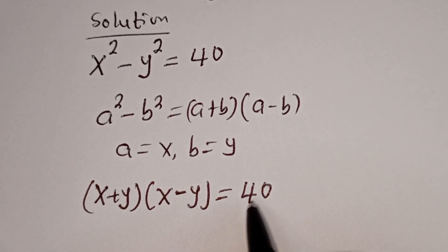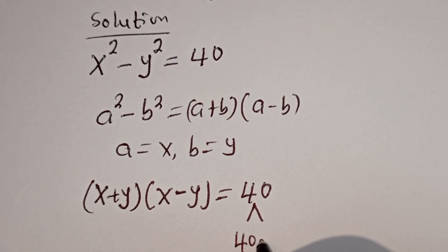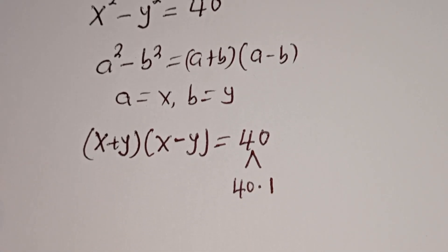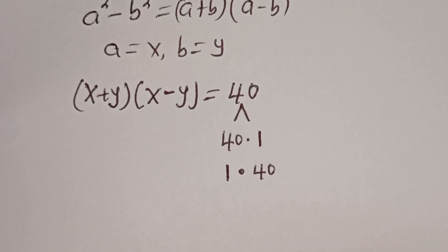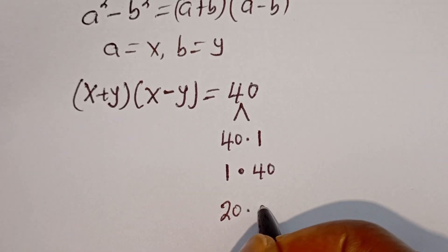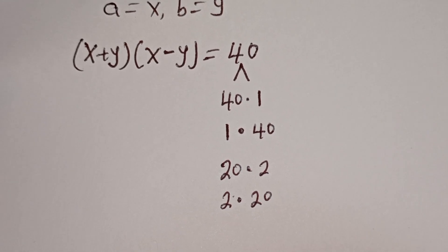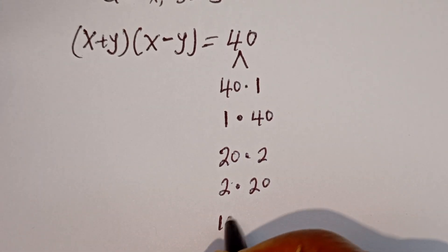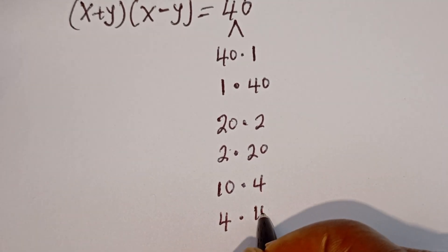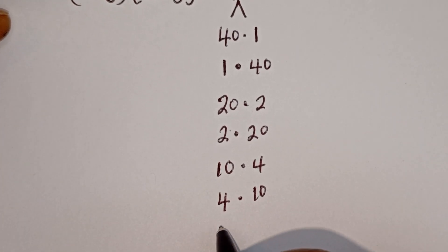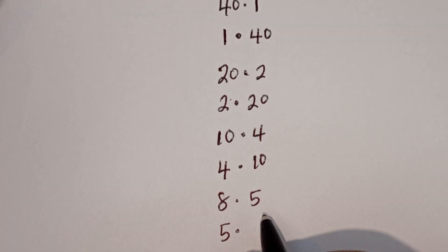Let's find the factor pairs of 40. We have: 40 multiplied by 1, 20 multiplied by 2, 10 multiplied by 4, and 8 multiplied by 5.